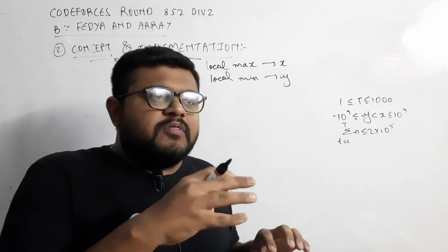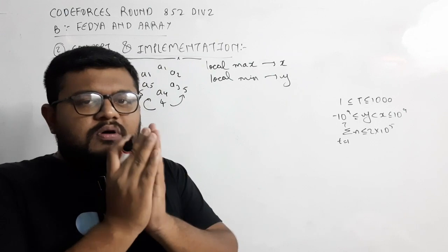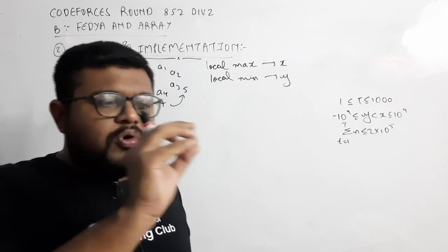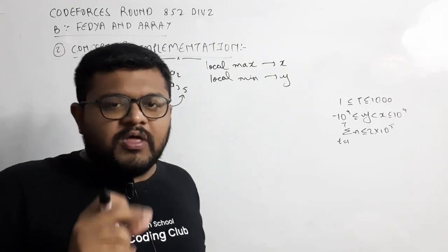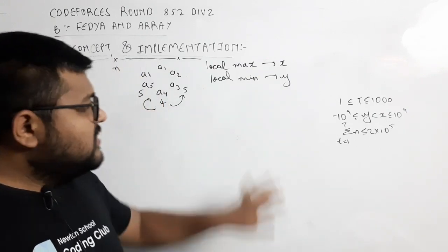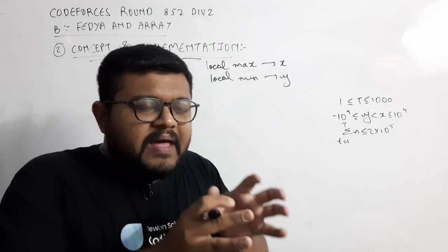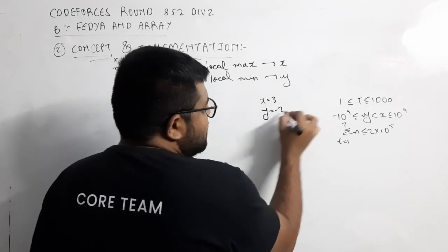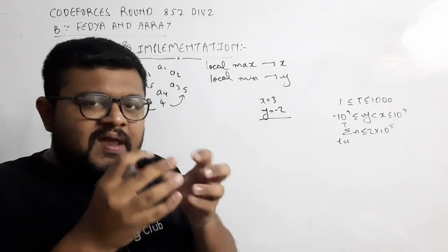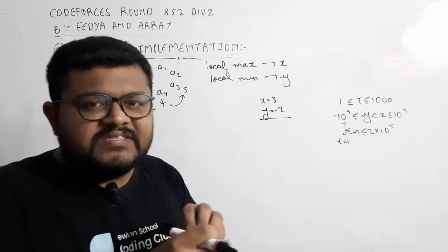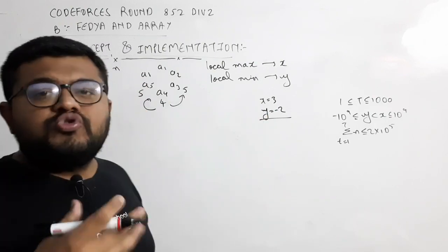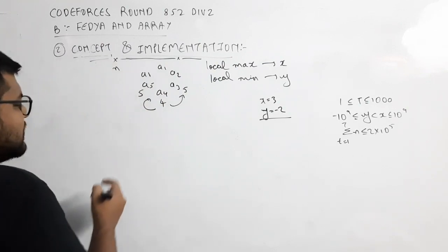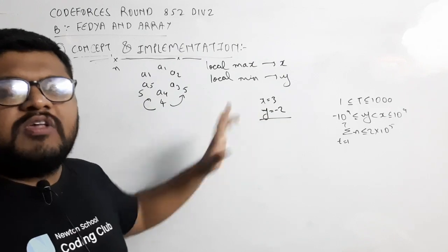Now understand this: there can be multiple possible answers, but we need a standardized, generalizable approach we can code. One thing to understand is that two neighbors will always differ by exactly 1, so if a value is 3, its neighbor is 4 or 2. The key insight is: to minimize total elements, we want to achieve the sum x with as few local maxima as possible, and achieve sum y with as few local minima as possible.